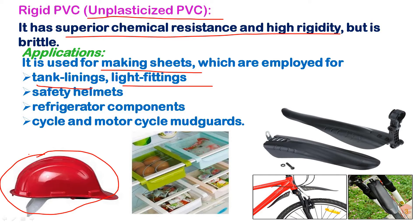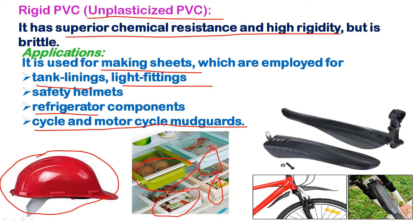Rigid PVC is used for making sheets such as tank linings, light fittings, and safety helmets used in industries, factories, coal mines, and by engineers. It is also used for refrigerator components such as containers and tins for storing food. Additionally, rigid PVC is replacing metals in cycle and motorcycle mudguards.